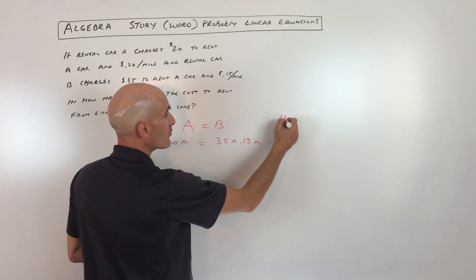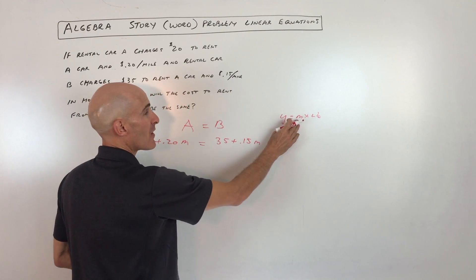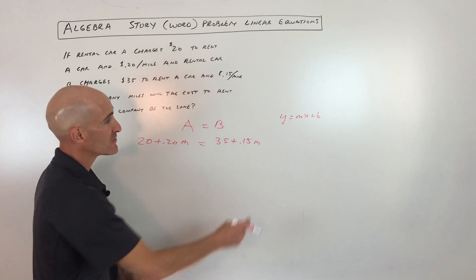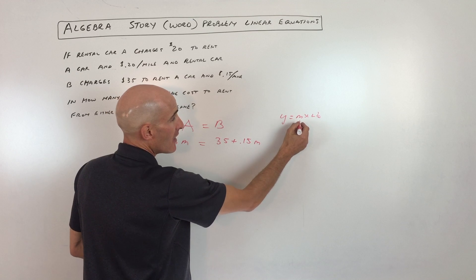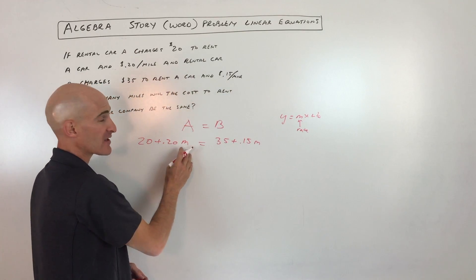Now one thing I want to point out real quick is that when you're working with linear equations or lines, you think about y equals mx plus b. The m is the slope and the b is the y-intercept. But in word problems or story problems, the m is really the rate. So in this case, how much per mile? That's the rate per mile.